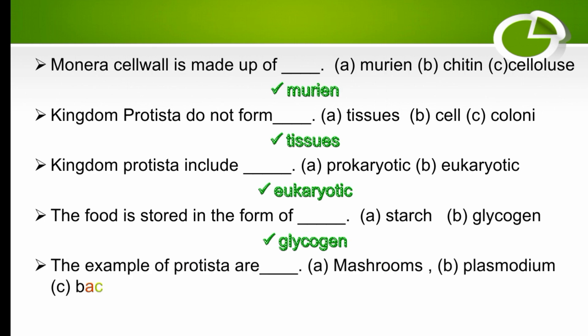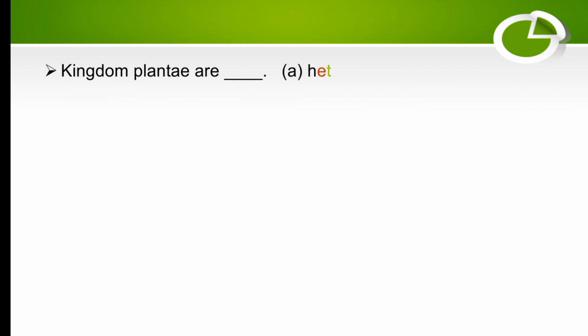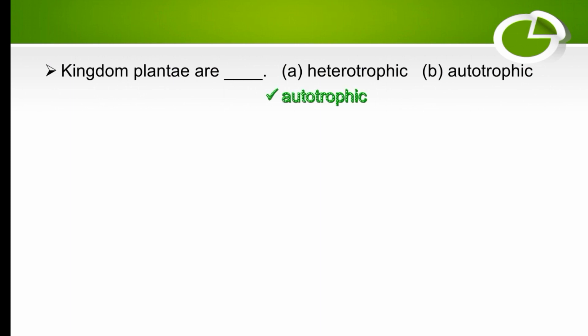An example of Protista is Plasmodium — the right option is Plasmodium. Kingdom Plantae are autotrophic — they can prepare their own food. The right option is autotrophic.